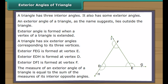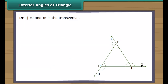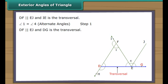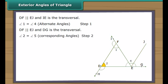Let us now prove the same. We draw a line segment EJ from point E such that EJ is parallel to DF. If we regard IE as a transversal intersecting the parallel lines DF and EJ, angle 1 is equal to angle 4 (alternate angles). If we regard DG as a transversal intersecting the parallel lines DF and EJ, angle 2 is equal to angle 5 (corresponding angles).